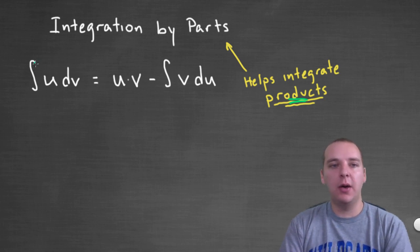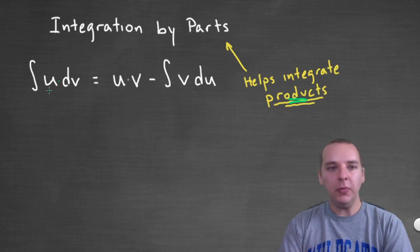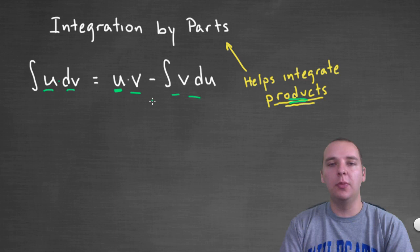Right off the bat we can see it says the integral of u times dv. So the u and the dv are going to be choices that we make based off of what our integral is. We're going to choose one term to be the u, one term to stand as dv. And based off of our choice, using u and dv we can find the rest of these guys on the right hand side and that will be our answer.